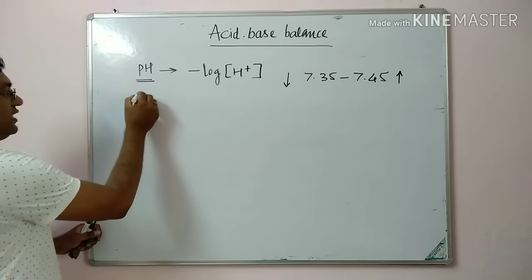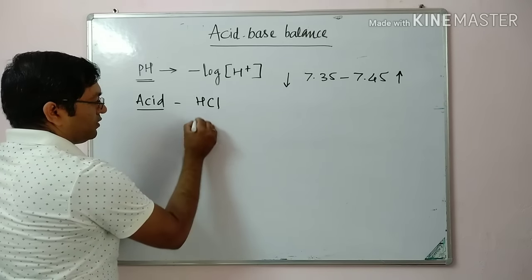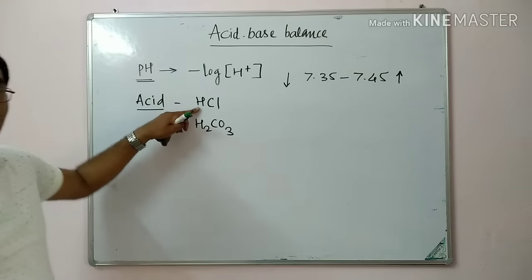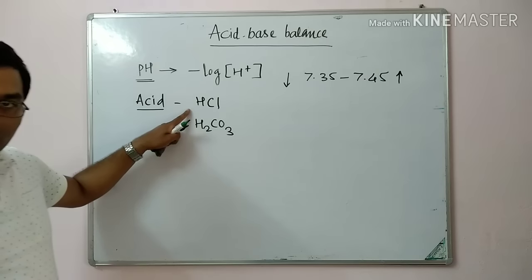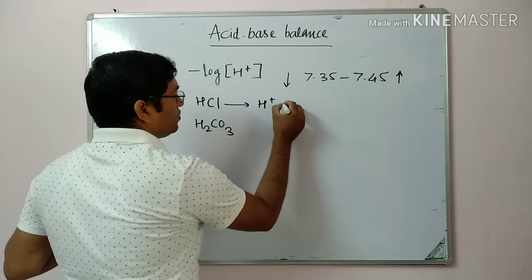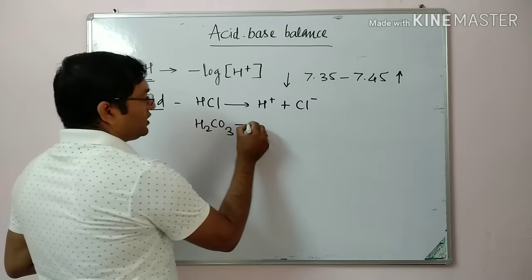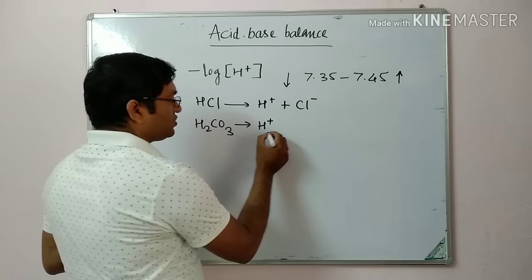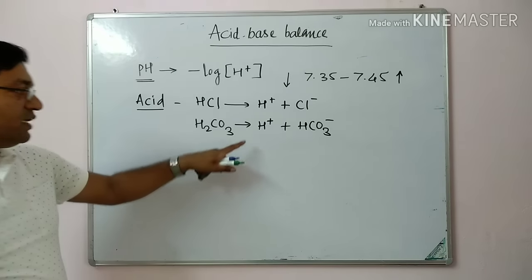pH is inversely related to hydrogen ion concentration. The next terminology is acid. Examples are hydrochloric acid and carbonic acid. HCl is a strong acid because it donates protons and ionizes completely into H⁺ ions and chloride ions. H₂CO₃ is a weak acid because it ionizes incompletely, dissociating into H⁺ and bicarbonate ions.